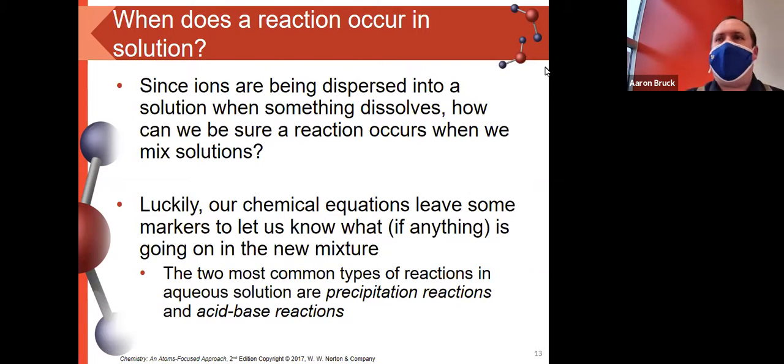How do I know that I don't have just a more complicated mixture of ions? Well, the way to approach that is we look for some telltale markers. And you know what those markers are. They're the kinds of things that we look for for any chemical change: heat, light, solid formation, gas formation, those kinds of things.